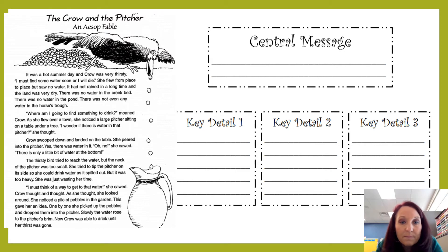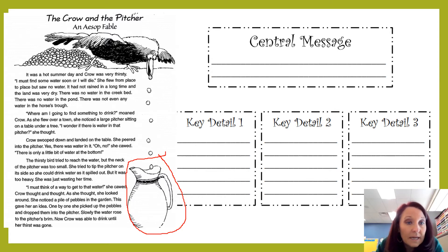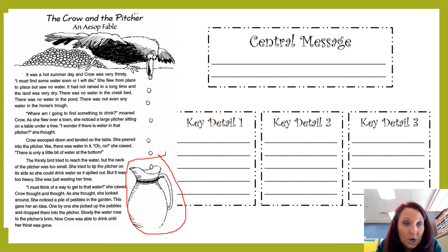Follow along with me as I read. Remember, we're looking for details that will help us determine the central message. The Crow and the Pitcher. By the way, a pitcher is the thing shown that holds juice or water to drink out of. It was a hot summer day and crow was very thirsty. 'I must find some water soon or I will die.' She flew from place to place but saw no water. It had not rained in a long time and the land was very dry. There was no water in the creek bed, no water in the pond, and not even any water in the horse's trough — where animals like cows and horses get their water.